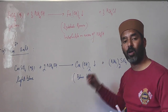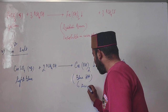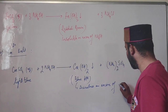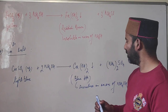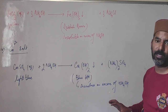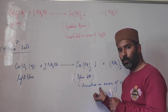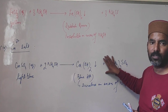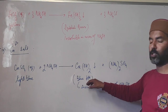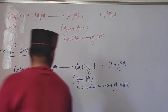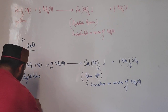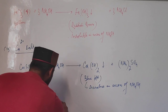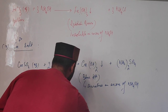When excess ammonium hydroxide is added, the blue precipitate dissolves. The reason is that a water-soluble complex salt is formed. The equation involves copper hydroxide (solid precipitate) reacting with excess ammonium hydroxide.